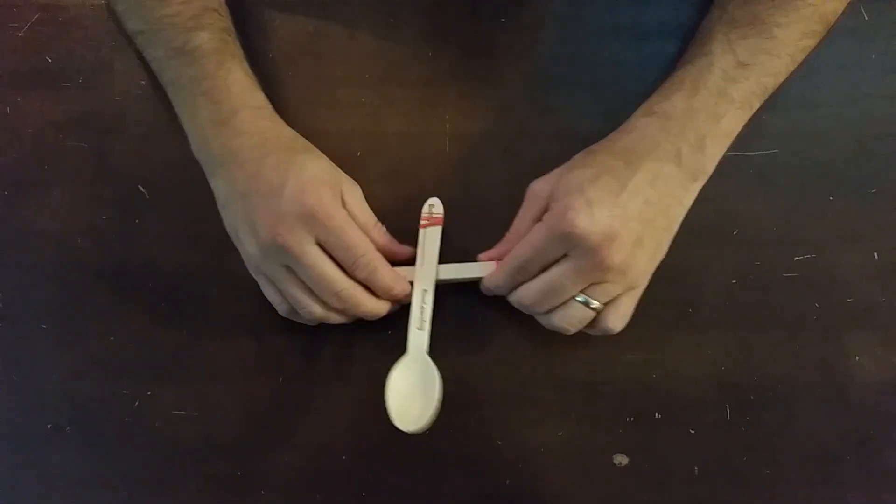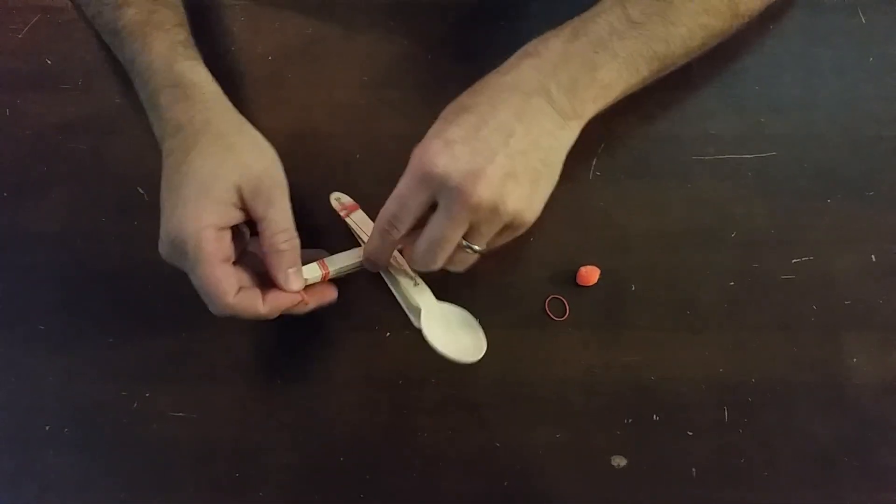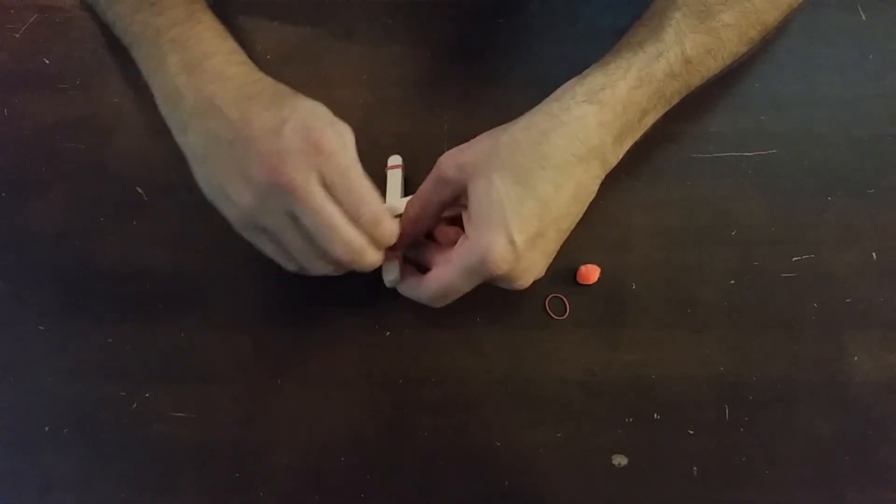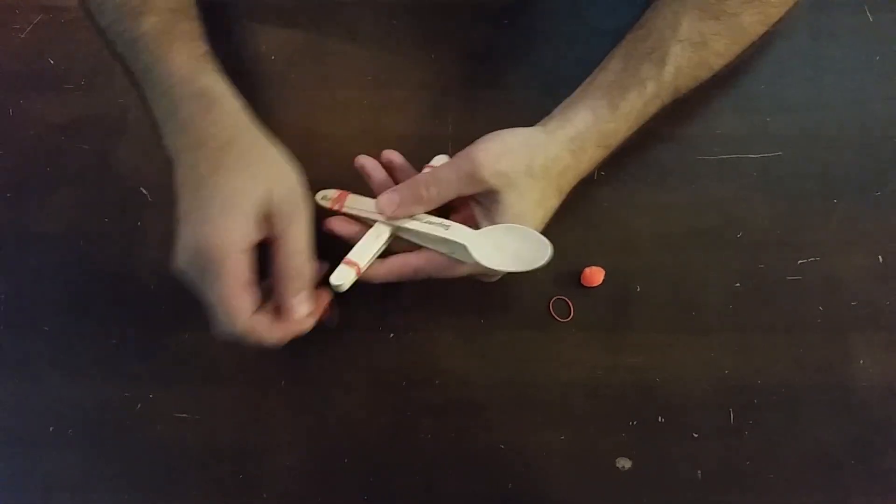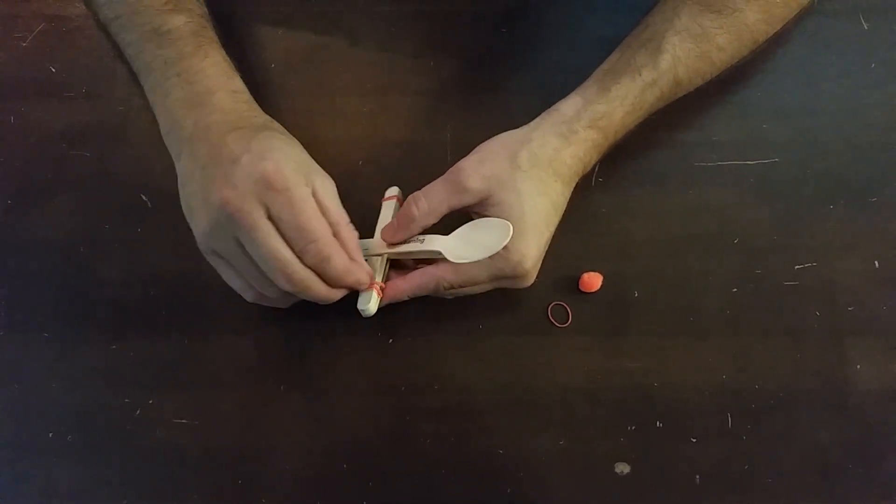So now you're left with two more rubber bands, and we're going to put the rubber band over the one end here. So this is one of the side pieces we just did. We're going to put it on top so it's just a loop like this.